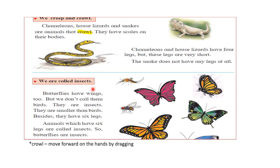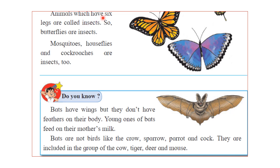The next classification is insects. Butterflies have wings too, but we don't call them birds — they are insects. They are smaller than birds and have six legs. Animals that have six legs are called insects. So butterflies, mosquitoes, house flies and cockroaches are all examples of insects. The main difference between birds and insects is that birds have two legs while insects have six legs.